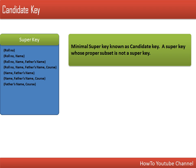So we have finally concluded that we have many super keys. Any possible combination of attributes which can uniquely identify a record is a super key. Now the next phase is candidate key. Candidate key is actually selected from the super key set.